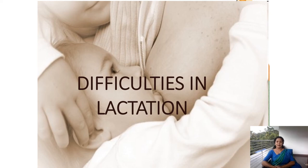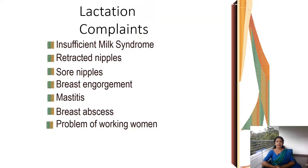Welcome back to obstetrics and gynecology videos. In this chapter we were discussing about the abnormalities of the puerperium. Today let us see the difficulties in lactation. The main problems that can affect lactation or proper breastfeeding include insufficient milk syndrome, retracted nipples, sore nipples, breast engorgement, mastitis, breast abscess, and problems with the working woman.